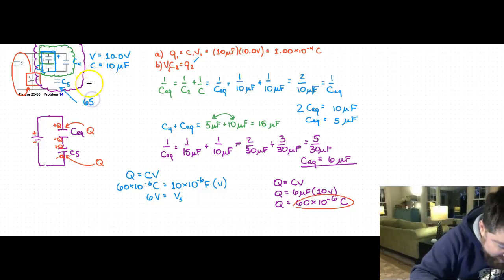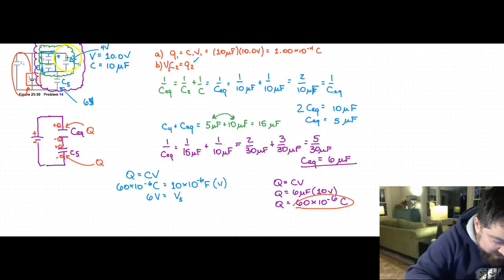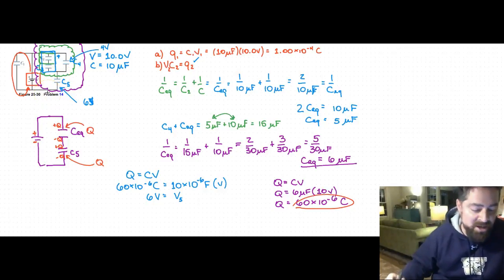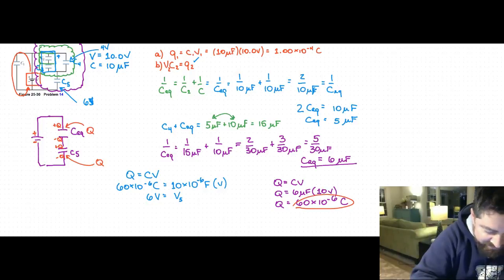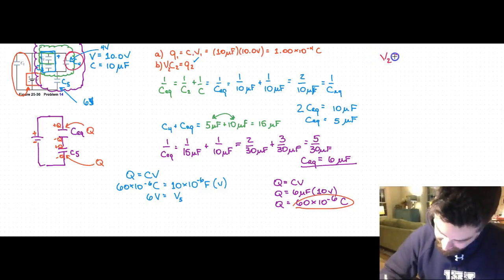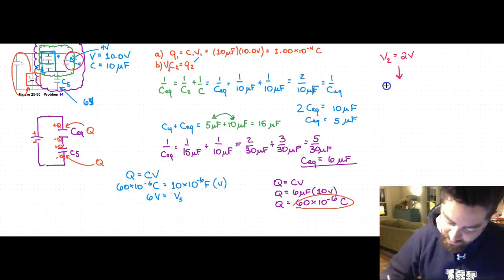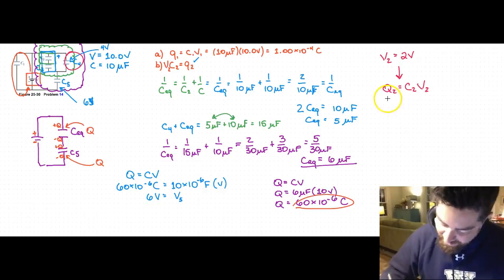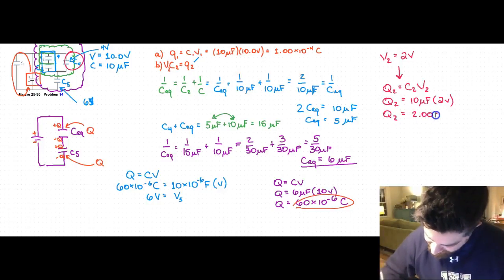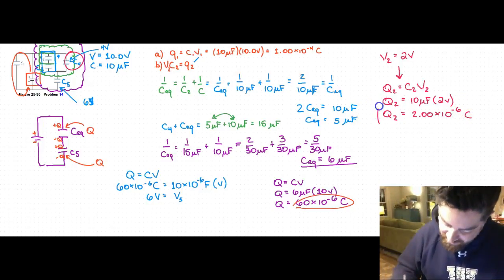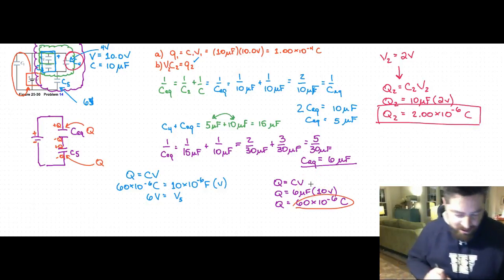If 6 volts drops across C5, then by Kirchhoff's loop law the voltage across C4 must be 4 volts, since the total must be 10 volts. C2 and C3 are in parallel with C4, so they also share 4 volts. Since C2 and C3 are identical capacitors in series, each gets 2 volts. Therefore Q2 = C2 times V2 = 10 microfarads times 2 volts = 20 times 10 to the minus 6 coulombs.